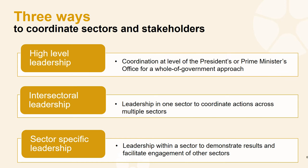Here are three examples of how countries that have made progress in early childhood development have set up governance structures and coordination mechanisms. The first is high-level leadership — coordination at the level of the president's or prime minister's office for a whole-of-government approach. The second is intersectoral leadership, where leadership is given in one sector to coordinate actions across multiple sectors. The third is sector-specific leadership — leadership within a sector to bring different units together, demonstrate results, and facilitate engagement with other sectors.